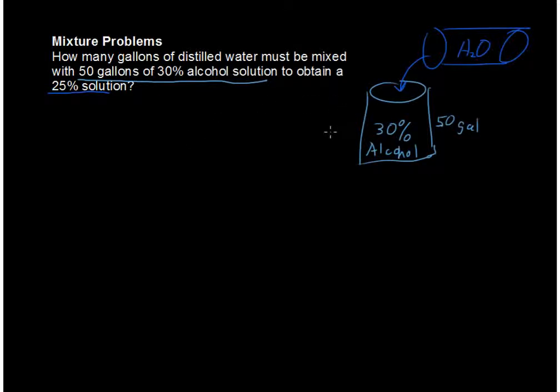But the amount of alcohol is not changing, so 30% of 50 gallons is 15. So 15 gallons of this is pure alcohol. And I'll come back to that point because that's important when you're setting up these problems. You want to understand what's happening.